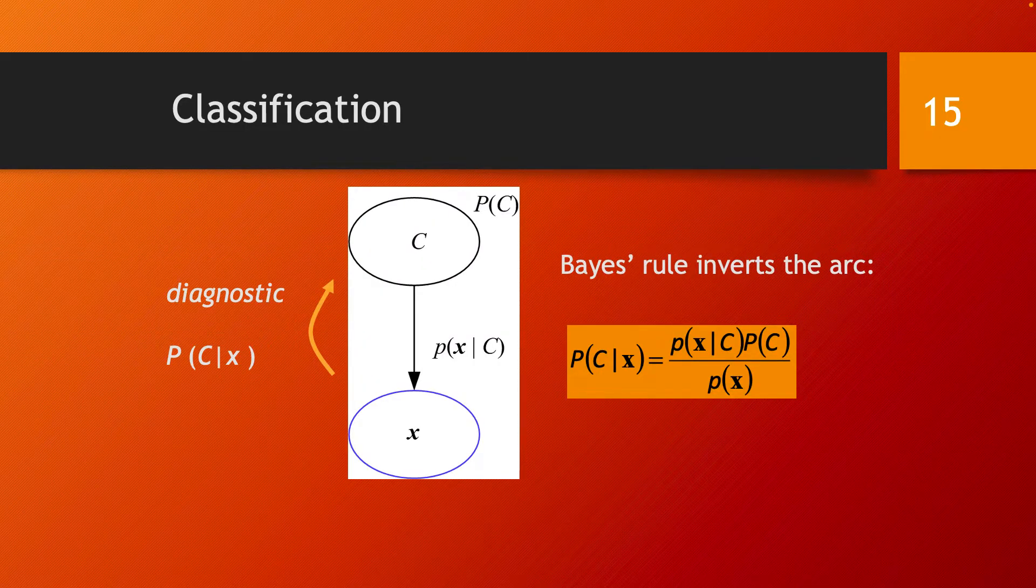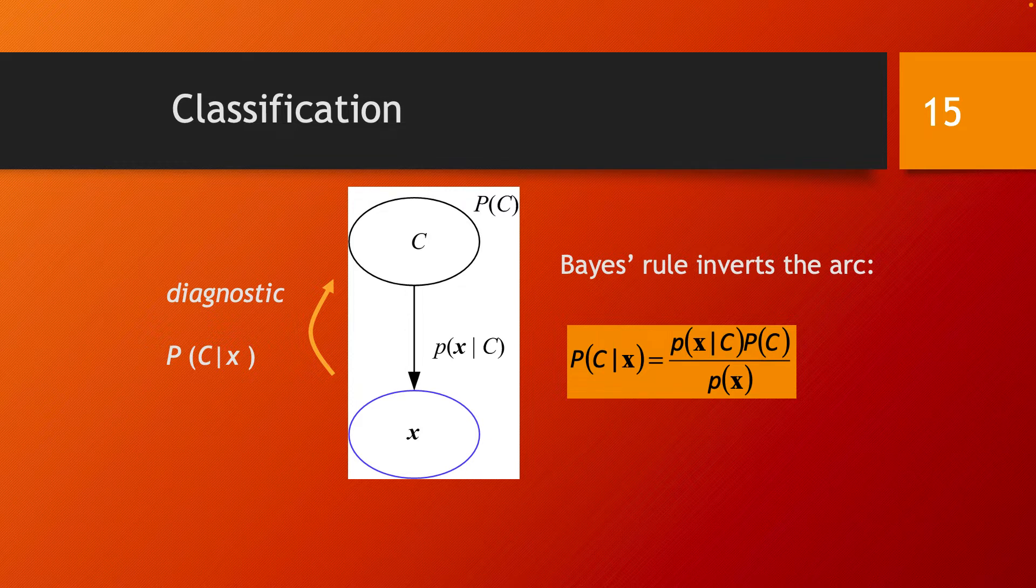In the case of classification, the graphical model we may use is this one, with a multinomial variable C standing for the classes of the model, and a variable X standing for the data point being drawn from this class. And on this edge, we have the conditional probability of getting that point X given the knowledge of its class C.